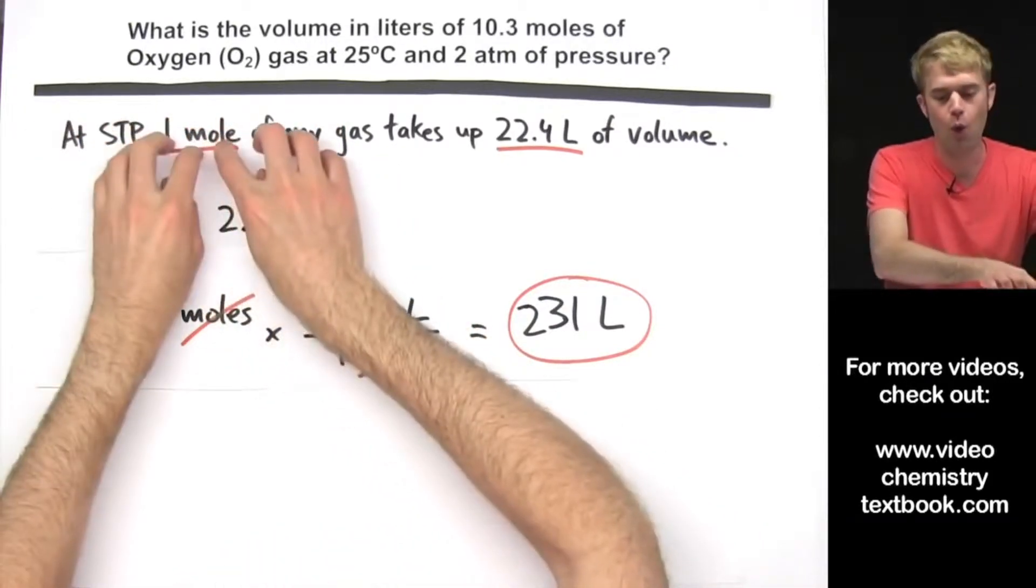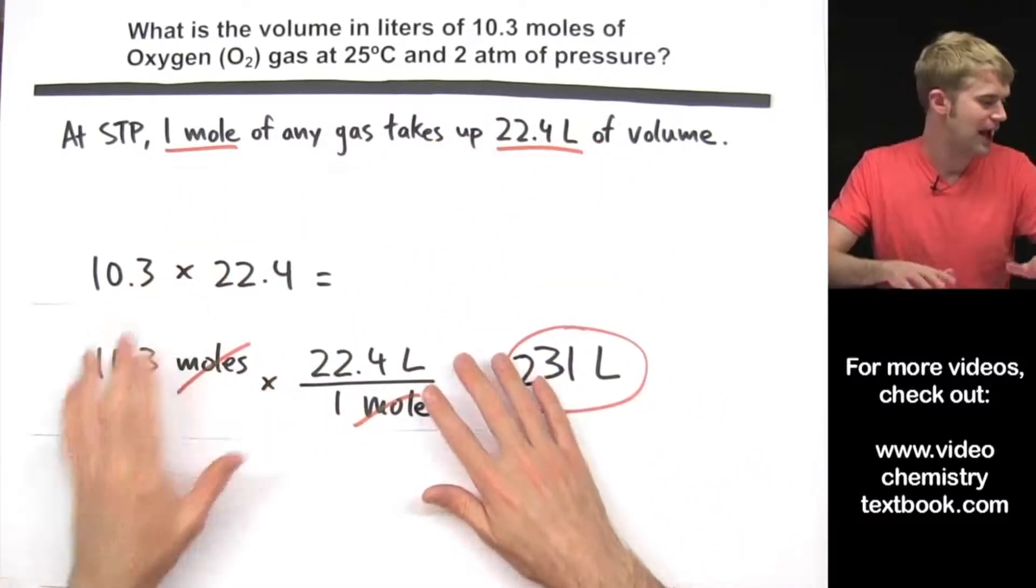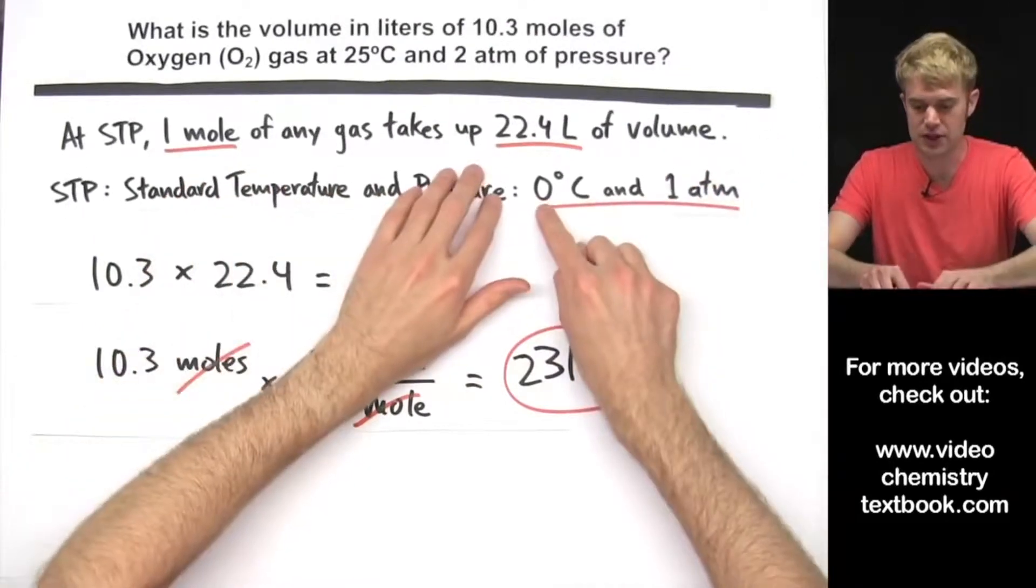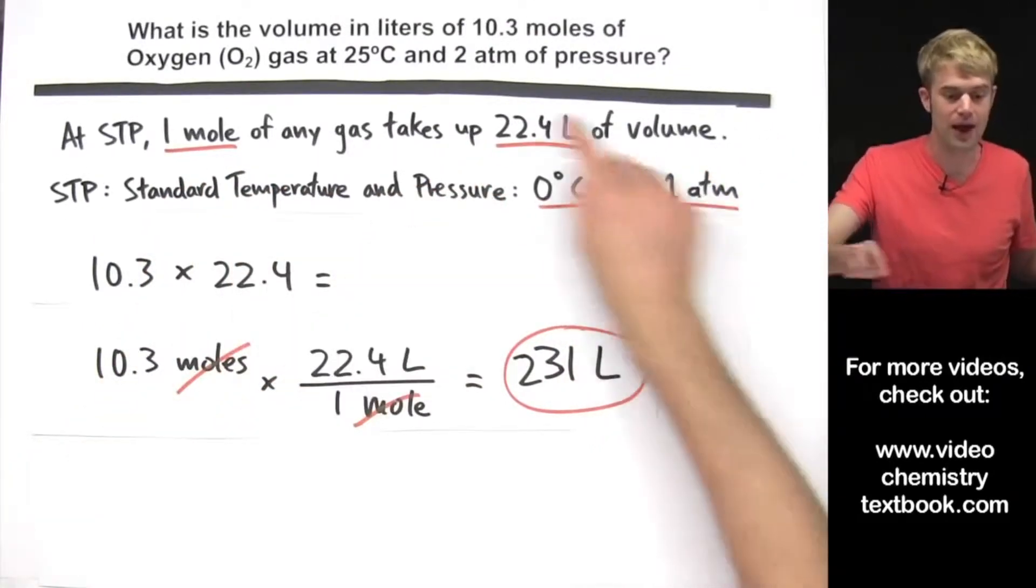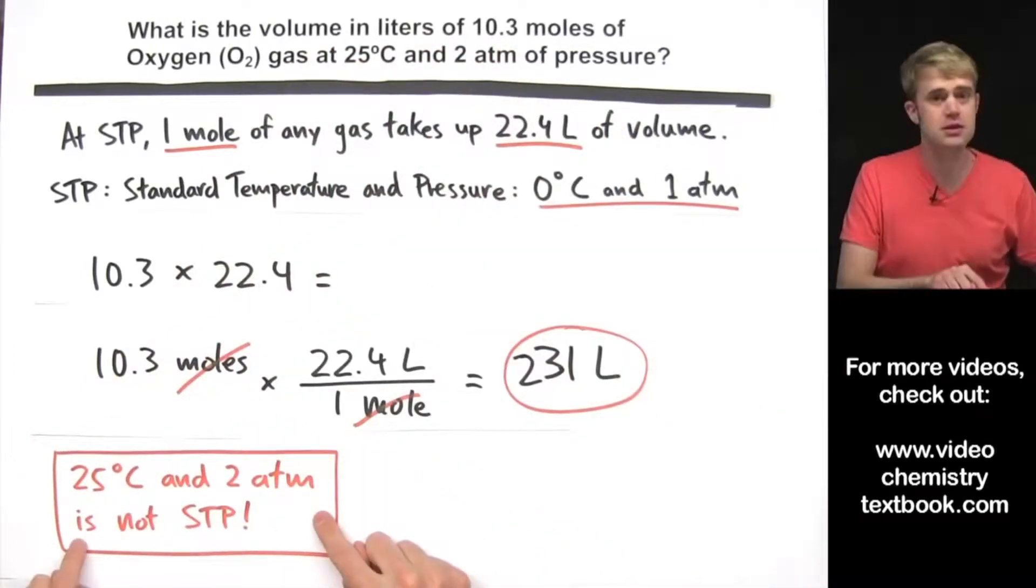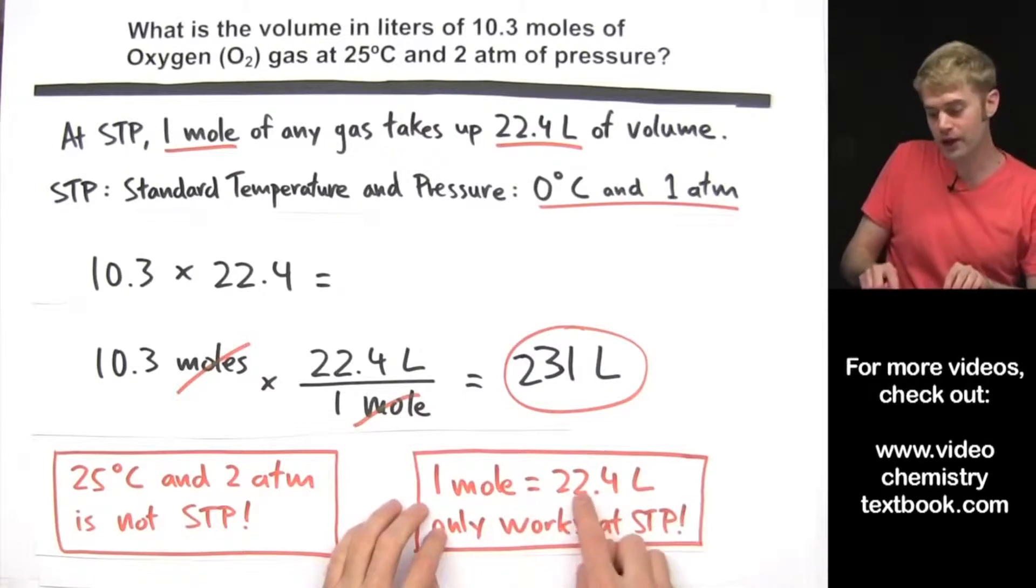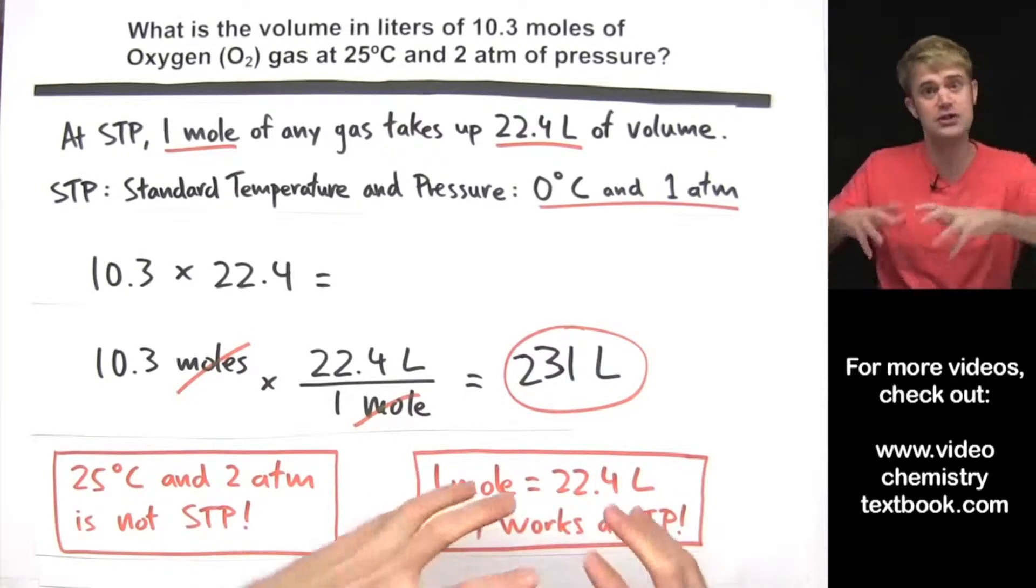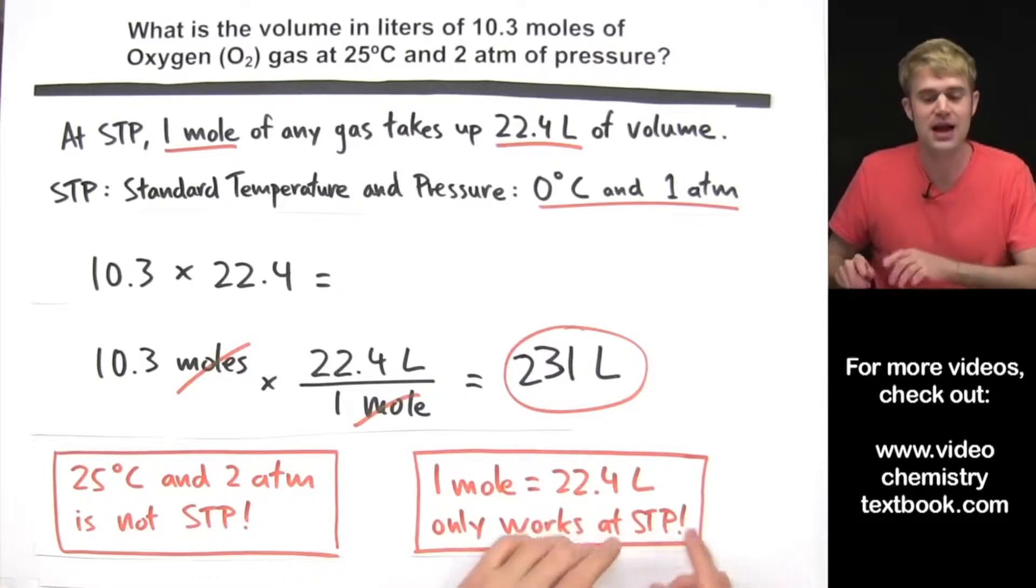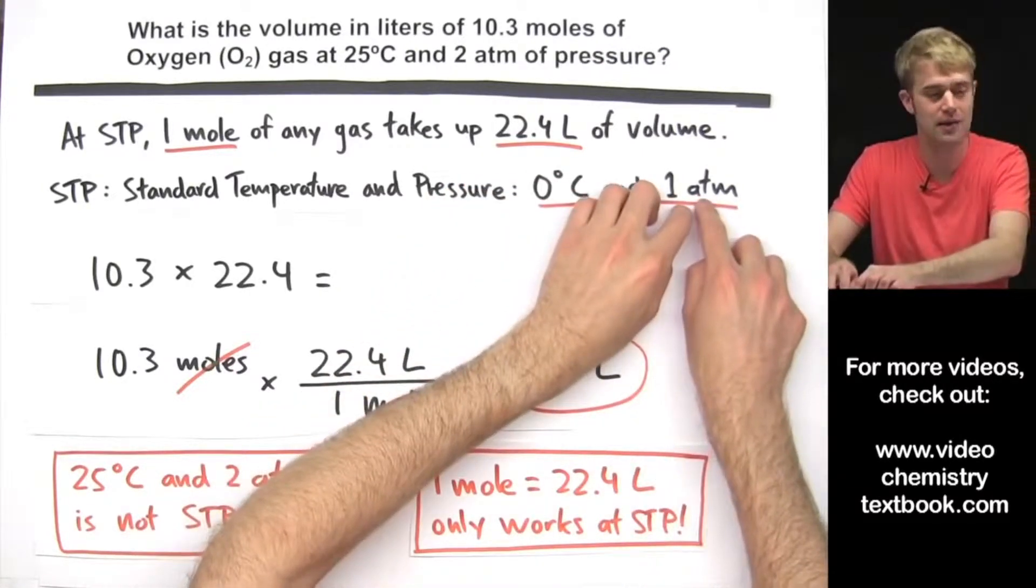At STP, 1 mole of gas takes up 22.4 liters, but remember, STP is 0 degrees Celsius and 1 atm. 25 degrees Celsius and 2 atm is not STP, and this whole thing where 1 mole equals 22.4 liters only works at STP, it only works at 0 degrees Celsius and 1 atm of pressure.